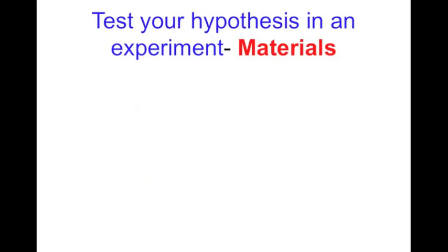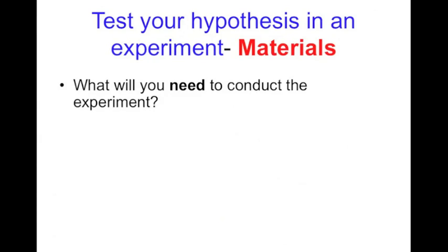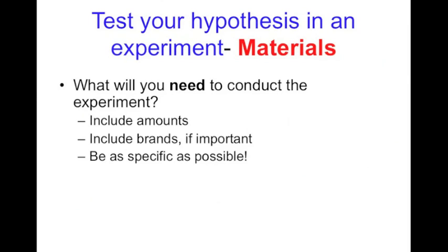In order to test your hypothesis in an experiment, for a lab report we then have to write up materials and procedures. What are we going to use and how are we going to do this? The material section is what are you going to need to conduct this experiment. We want to include amounts if we're doing a formal lab report so that someone could replicate and know how much we used. We'd want to include brands of products if that's relevant or important, so we'd want to just be as specific as possible. Typically this is going to be in a bulleted list, not in paragraph form, just so it's really easy and clear to read for someone who wants to replicate what you're doing.